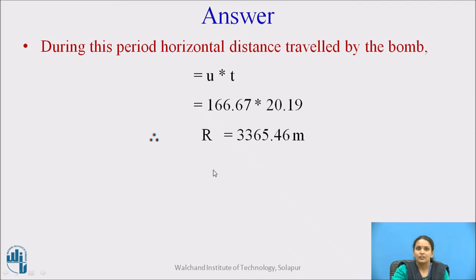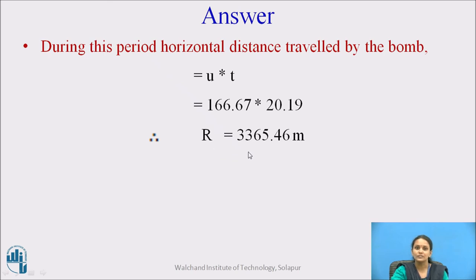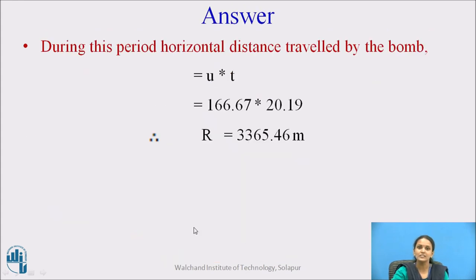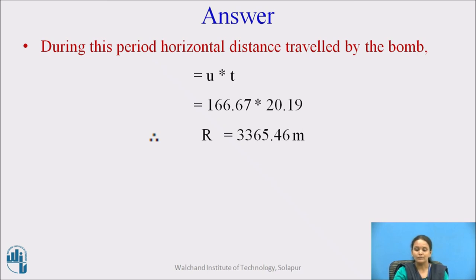So, after calculating the time of flight, you calculate the horizontal distance — that is the range — using the equation R = u·t. With initial velocity 166.67 and time of flight 20.19, you get horizontal range = 3365.46 meters. This means the particle travels and touches the ground at time 20.19 seconds, covering a distance of 3365.46 meters. Likewise, by using these equations, you can find the time of flight, horizontal distance, and in some cases the height of the particle from the ground surface.